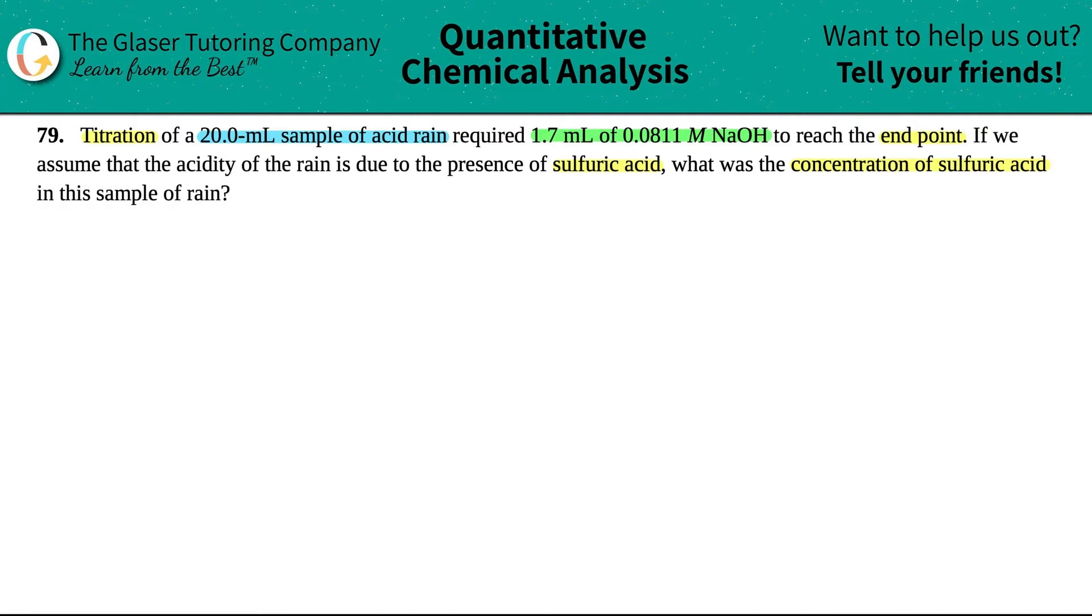So a couple of key things here. They don't give us a balanced equation, but that's totally okay. We are titrating, which is usually when you're adding an acid to a base. We had NaOH, which is one of our strong bases. We have this acid rain, and they're telling us that the acid rain is because of the sulfuric acid. Sulfuric acid is one of your strong acids, H2SO4. Now I have clearly a base and an acid, and we're titrating them, mixing them together to form a salt and water.